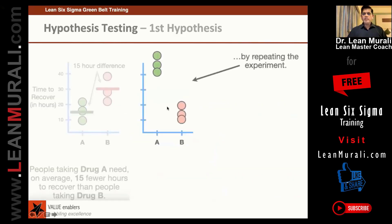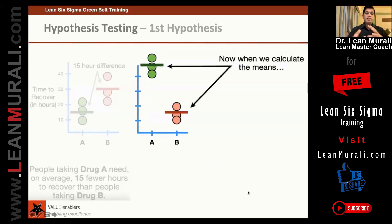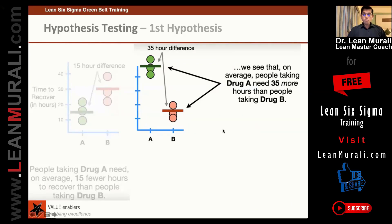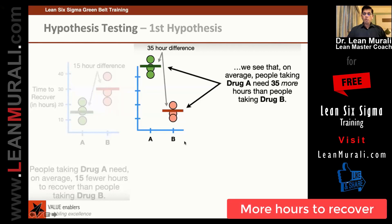Now that we have made this claim, let us go to the next step. We repeat this experiment. Suppose we got a new result and we calculate the means. Initially when I tested, I'm supposed to get the same results, but now it is the reverse. We see that on average, people taking drug A now need 13 more hours than drug B — a longer time to recover.